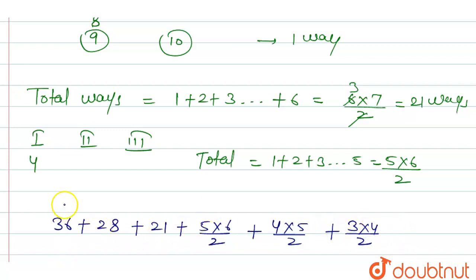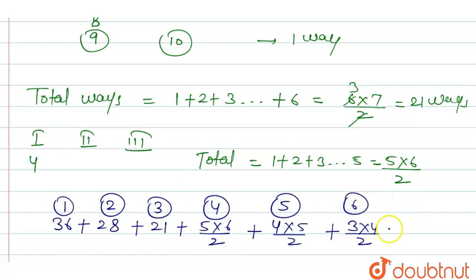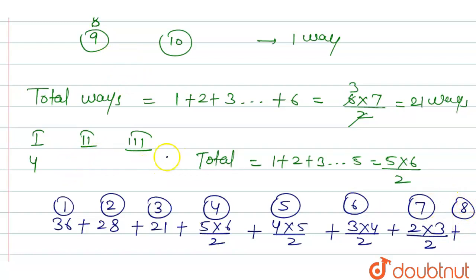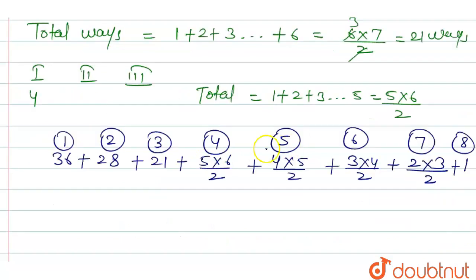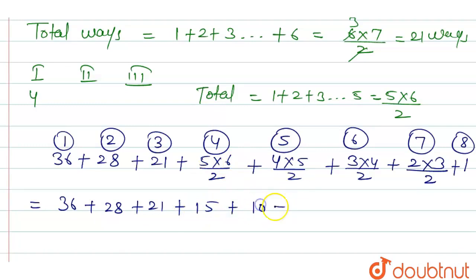For n1 = 7, it is 2 × 3 / 2 = 3 ways. For n1 = 8, there is only one choice: 8 in box one, 9 in box two, 10 in box three — just 1 way. Summing all cases: 36 + 28 + 21 + 15 + 10 + 6 + 3 + 1 = 120. So the total number of ways is 120.